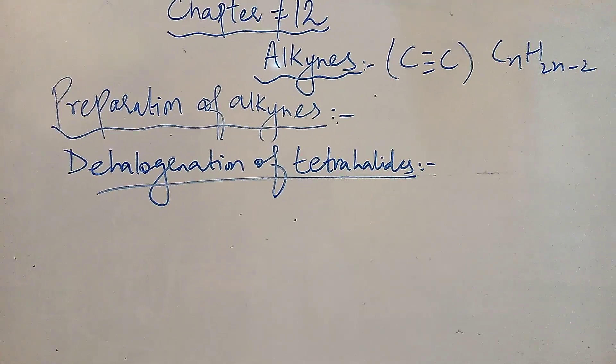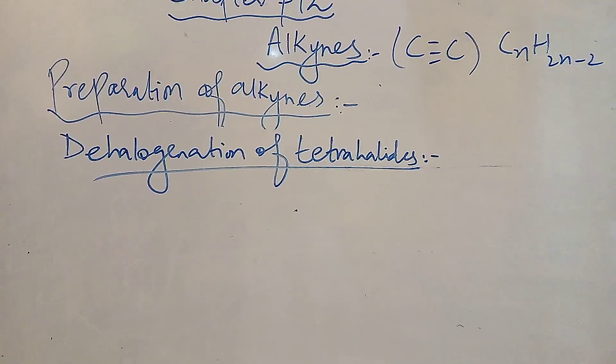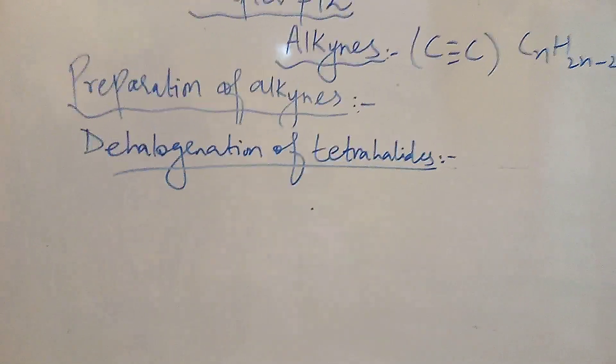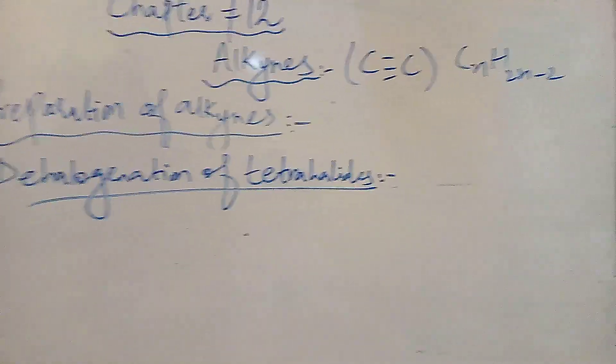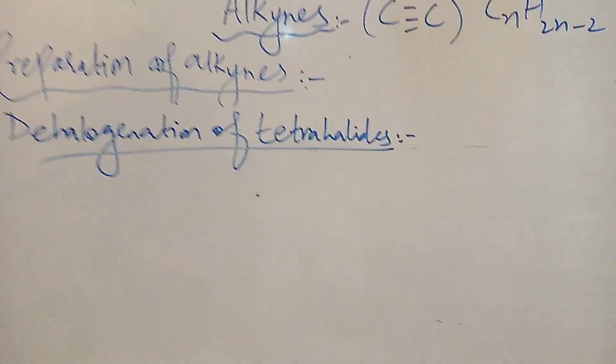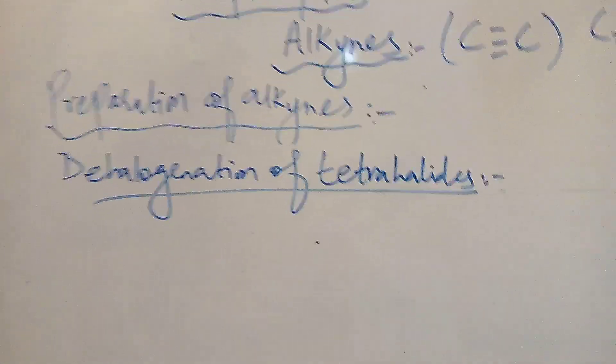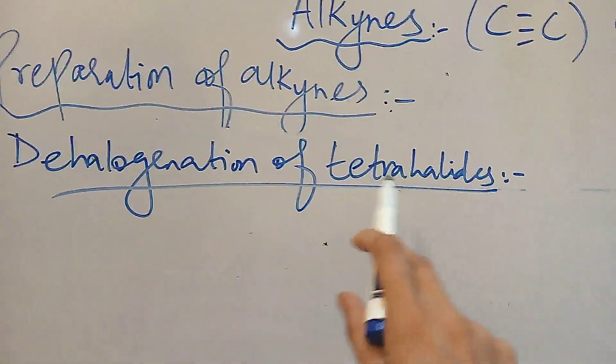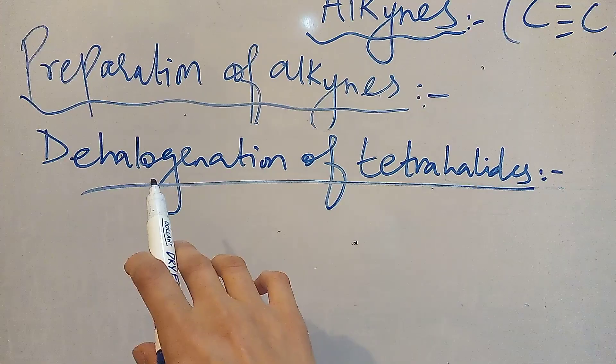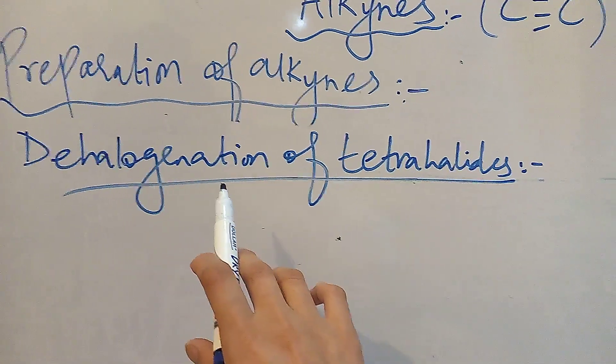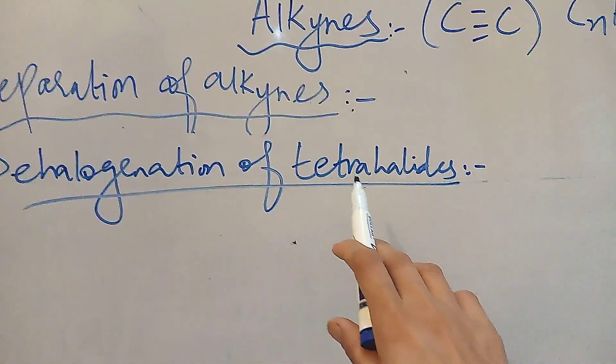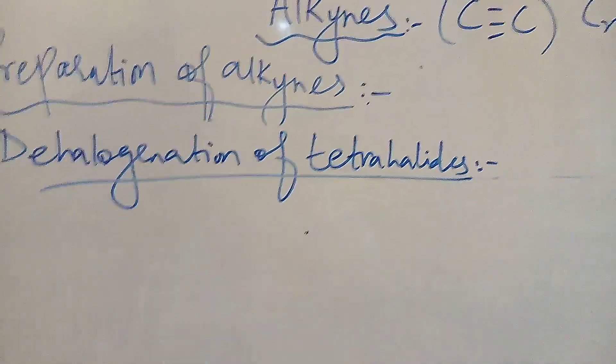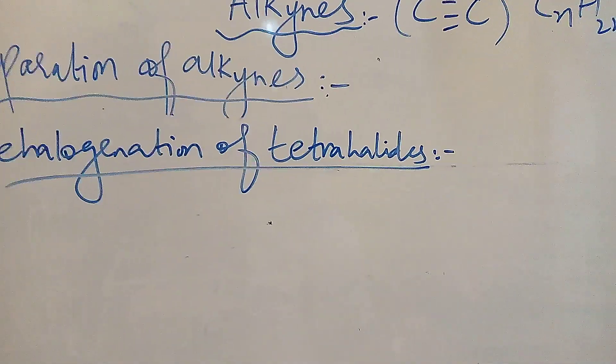Vizinal Dihalides are those alkyl halides which have two halogen atoms on adjacent carbons. The second method of Preparation of Alkynes is dehalogenation of tetrahalides. Dehalogenation means removal of halogens. We remove halogens from tetrahalides and then we will get alkynes.